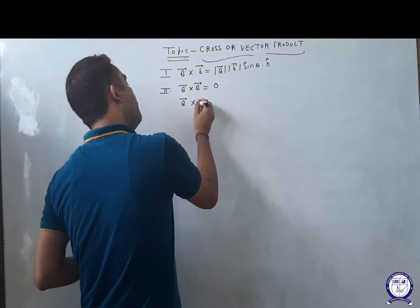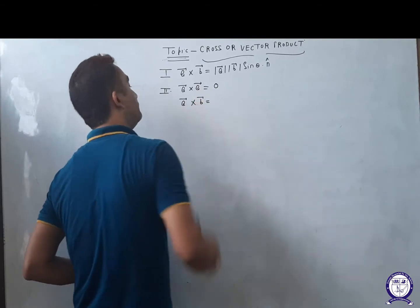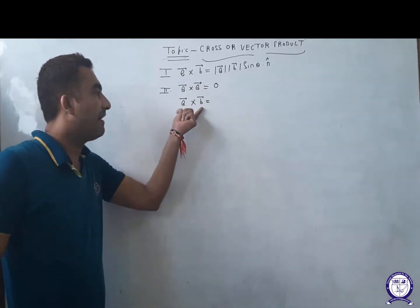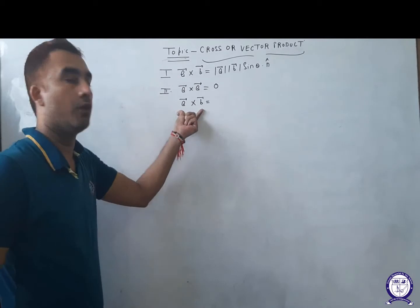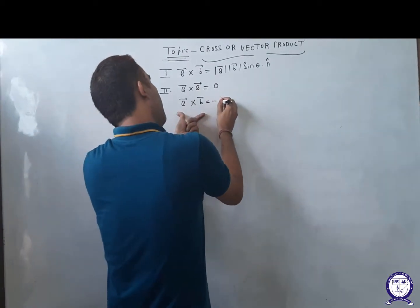If you want to interchange your vectors in a CROSS product, then a negative sign will be there. This means the cross product is not commutative.